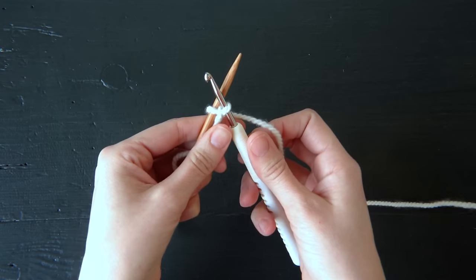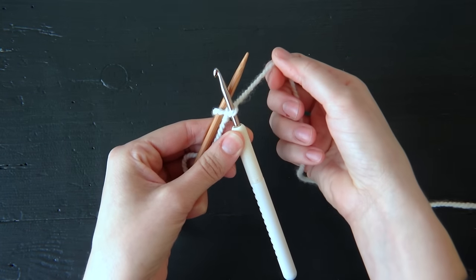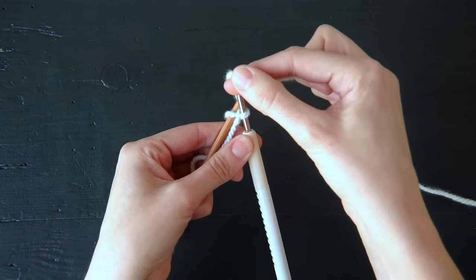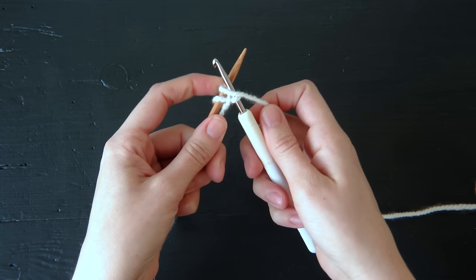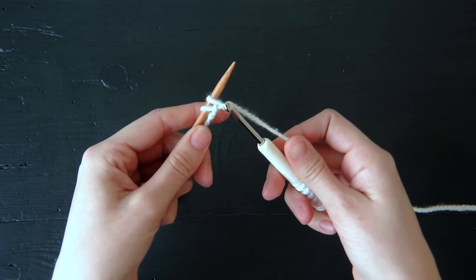So once again keep that crochet hook in front of the knitting needle. Take the working yarn behind, wrap your working yarn in front, pull your working yarn through.